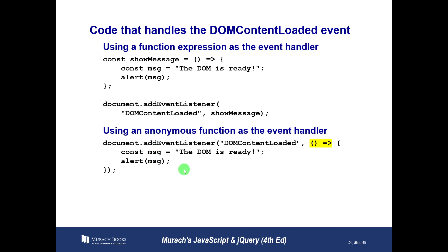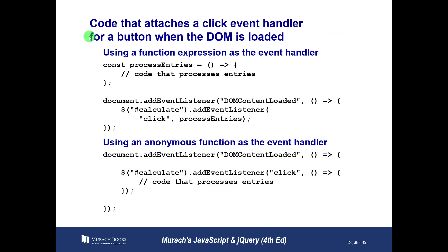Let's look at some code that attaches a click event handler for a button when the DOM is loaded. We have a function called processEntries — we don't need to worry about its internals right now, we just know it runs some code to process entries. Then in the document, we add an event listener for DOMContentLoaded using an anonymous function. That anonymous function finds the calculate button and adds a click event listener to it that calls processEntries. The DOMContentLoaded listener is where we put a lot of the code to attach all our different events and event listeners.